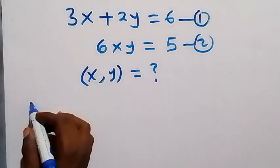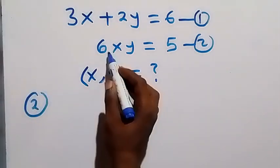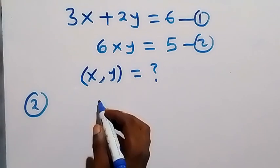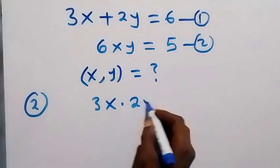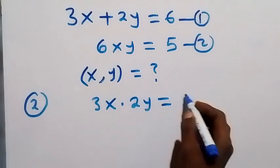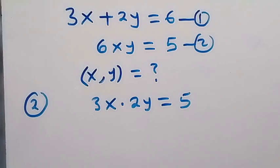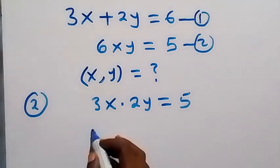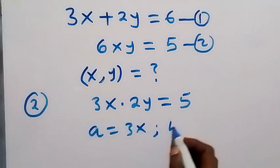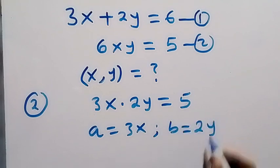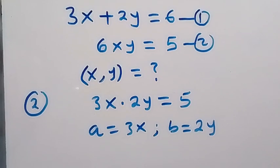From equation 2, we can write 6xy and separate it as 3x times 2y, which equals 5. In the next step, let's use letters to represent these: let a equal 3x, and b equal 2y.